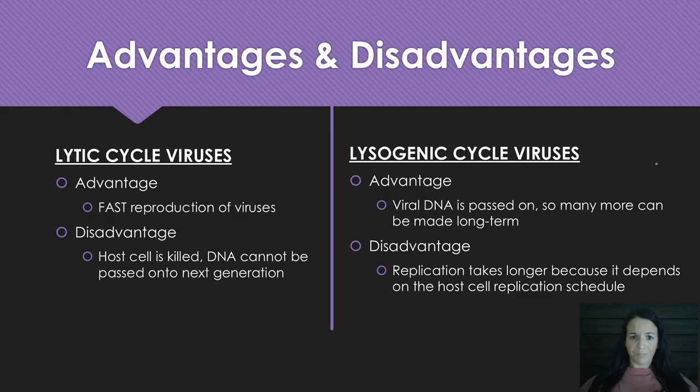Advantages and disadvantages of the two cycles: the lytic cycle's advantage is that it's fast — it reproduces and infects very quickly. The disadvantage is the host cell is killed; like a parasite, you never want to kill your host because then you don't have a home. The lysogenic cycle's advantage is that viral DNA is passed on — it's a long-term strategy. The disadvantage is it takes longer because it has to follow the replication schedule of the host cell.